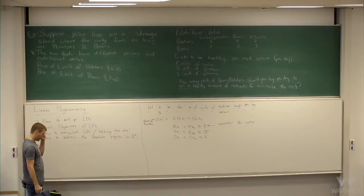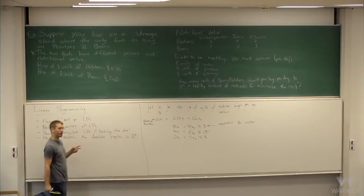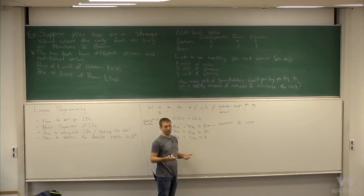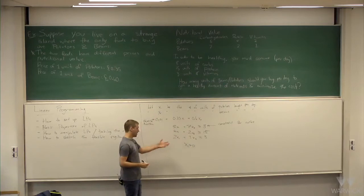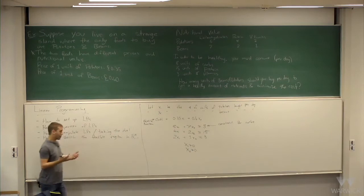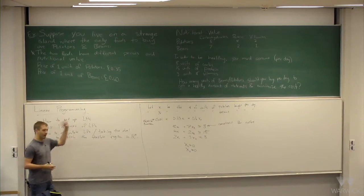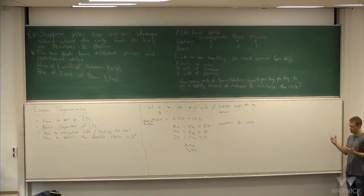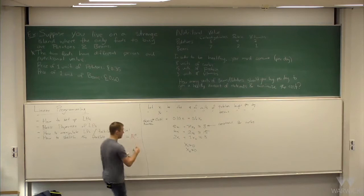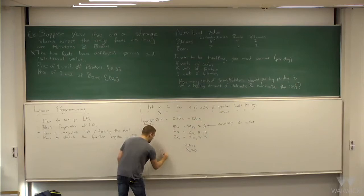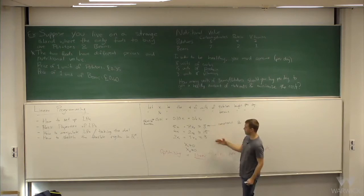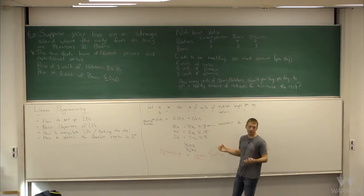There are two more constraints that might not be obvious but are quite important — otherwise you might get a nonsense solution. You can't buy a negative amount of potatoes or beans, so we also need non-negativity constraints: X1 ≥ 0 and X2 ≥ 0. Otherwise you might end up with a solution saying you should buy negative potatoes. This basic setup — optimizing a linear objective function over linear constraints with variables — is what we think of as a linear program.